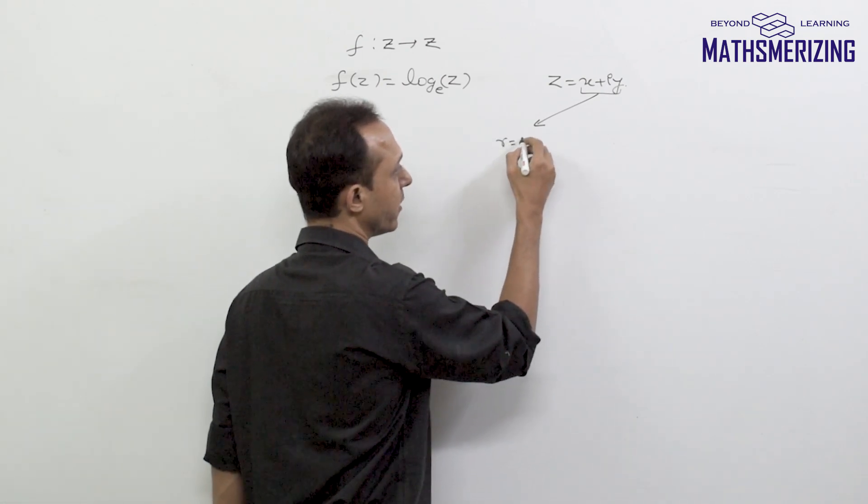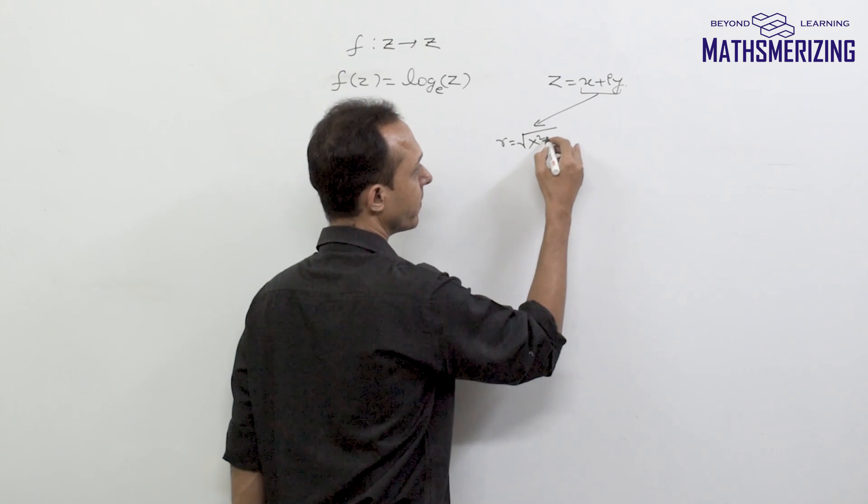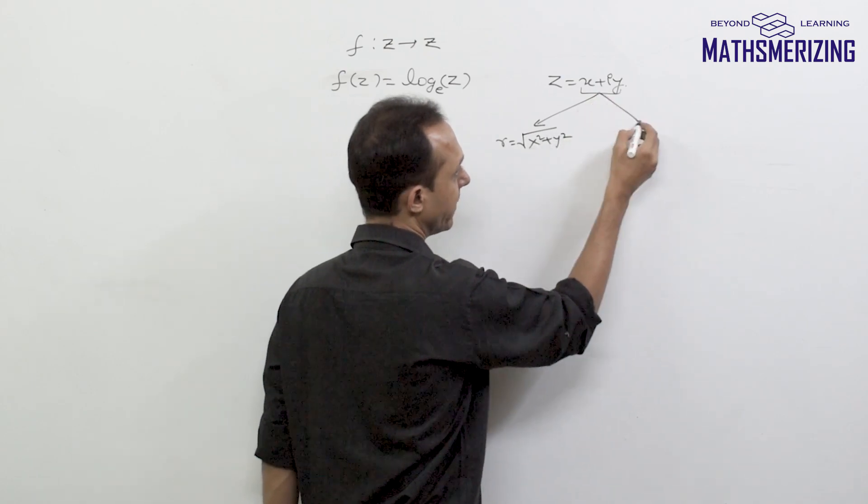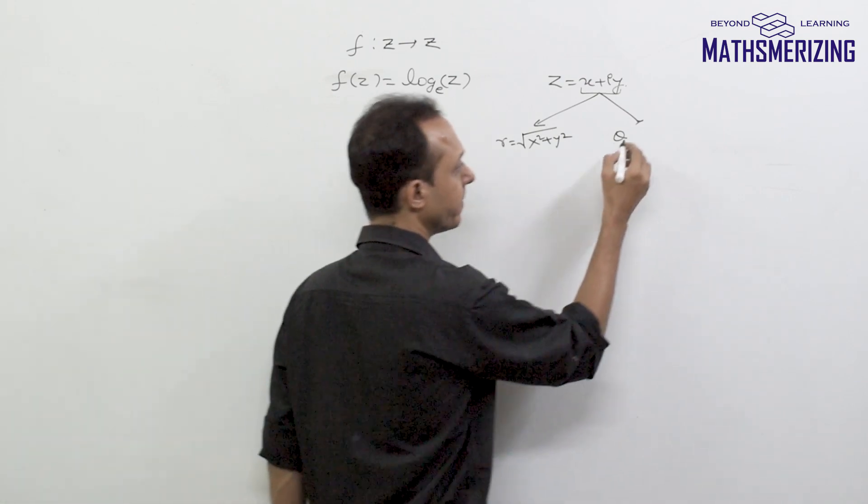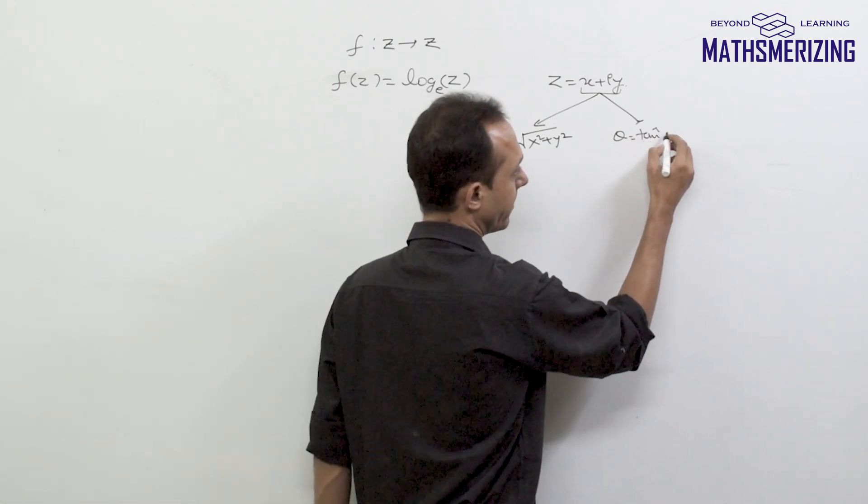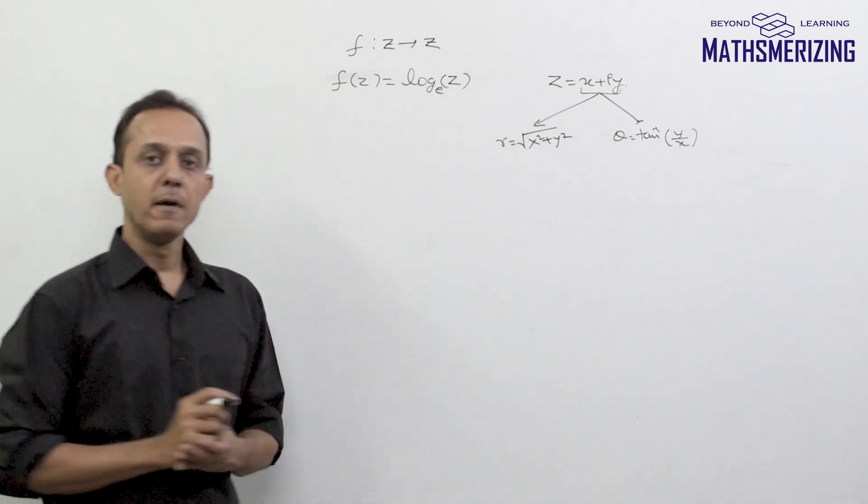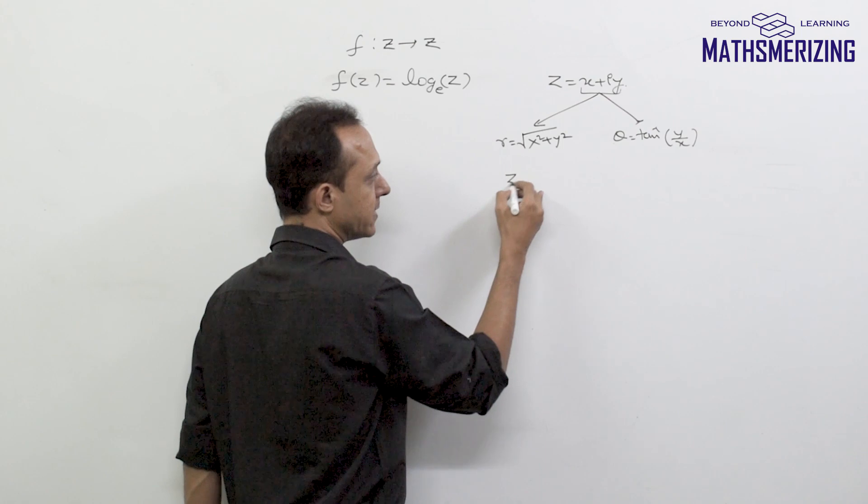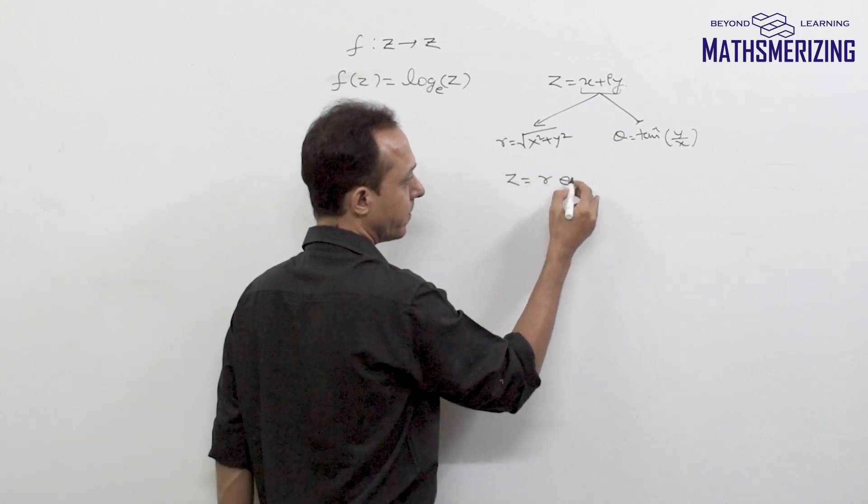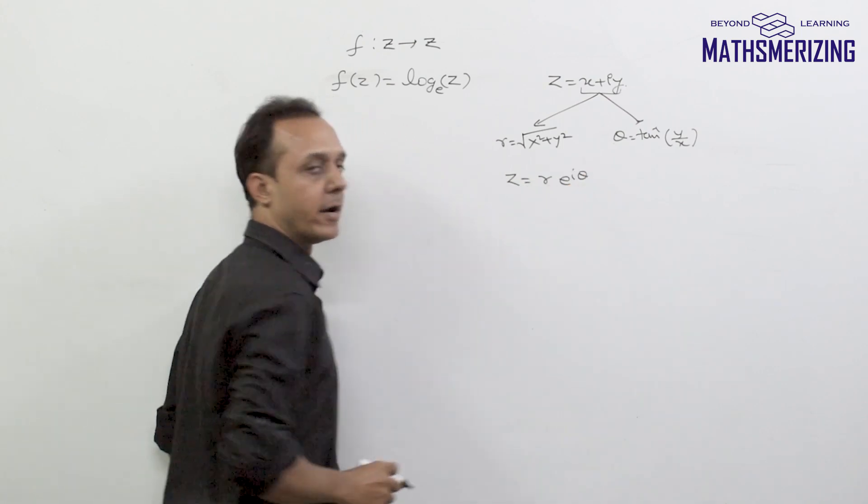And for that, we have to find its modulus and that'll be under root of x square plus y square. And we'll also have to find its argument which is theta and that is tan inverse of y by x. So then I can express this number as r into e to the power i*theta.